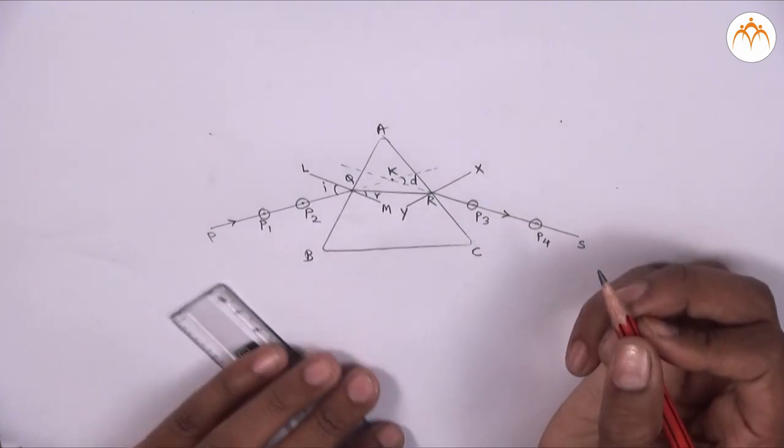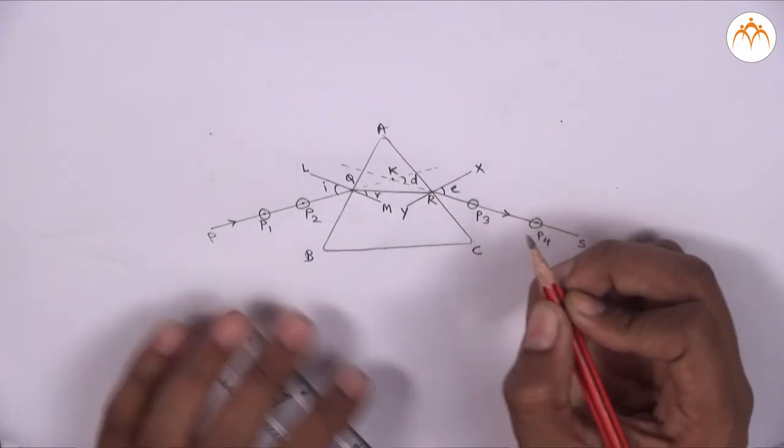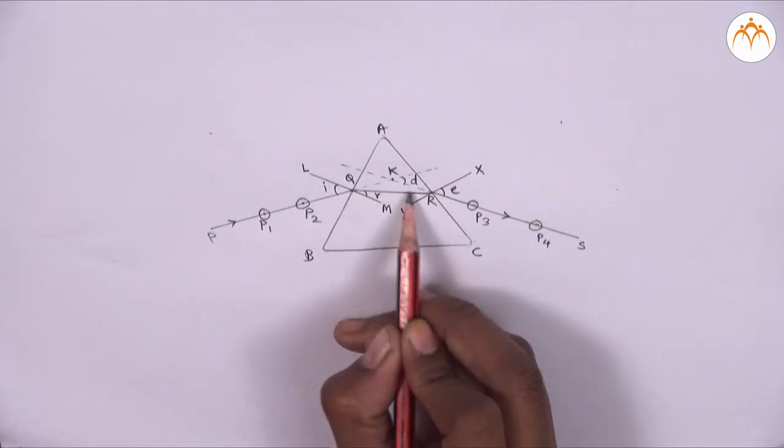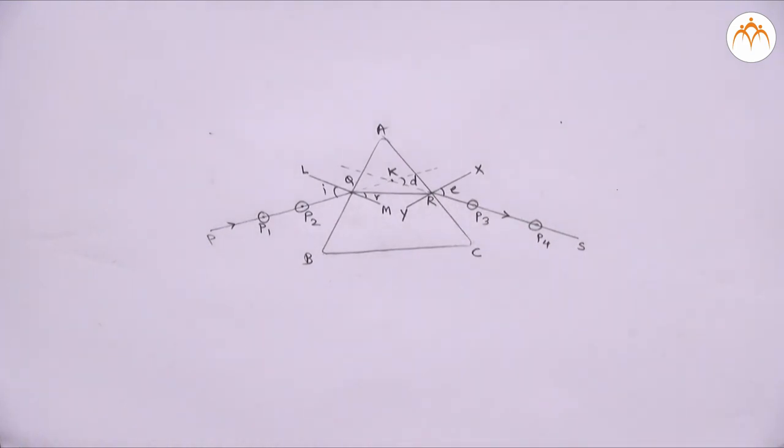Record the angle of incidence, angle of refraction, and angle of deviation—that is I, R, and D—for 30 degrees.